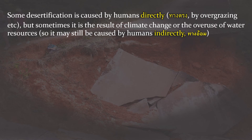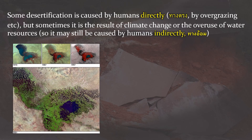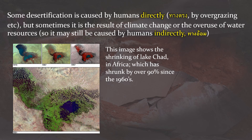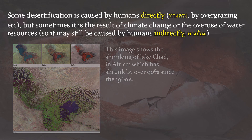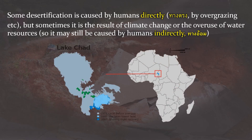Desertification is often caused by humans directly, but sometimes it is the result of climate change or the overuse of water resources, so this is a more indirect way that humans can cause desertification. Here we can see Lake Chad in the centre of Africa. In the last 30 years of the 20th century, it shrunk by over 90% in size. In 1973 it was a huge lake that spread across several countries in the middle of Africa. But because some of these countries were overusing its water resources, by the time 2001 came, it looks more like an inland reef of islands and swamps. Fortunately, in the years since then it has recovered slightly, but it is still way below the level it was before it was overused.